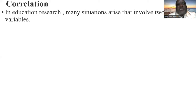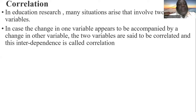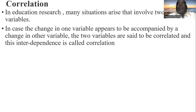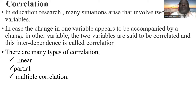In educational research, many situations arise that involve two or more variables. When there is a change in one variable that appears to be accompanied by a change in another variable, the two variables are said to be correlated. This interdependency is what we call correlation.